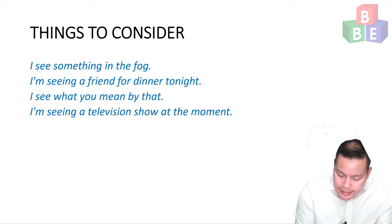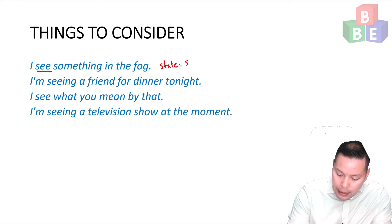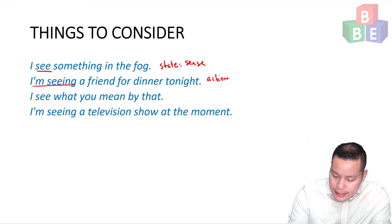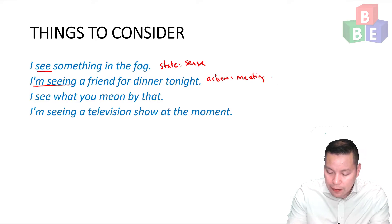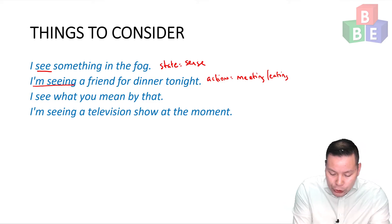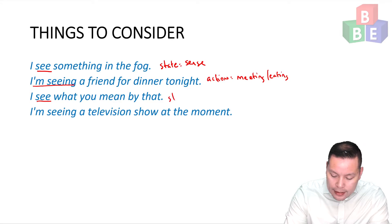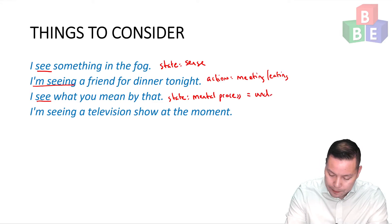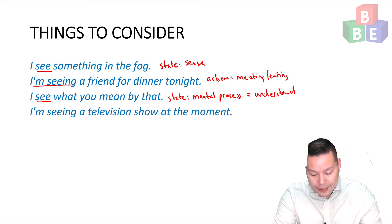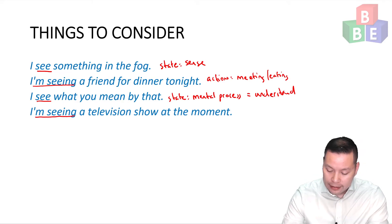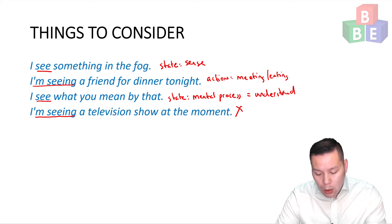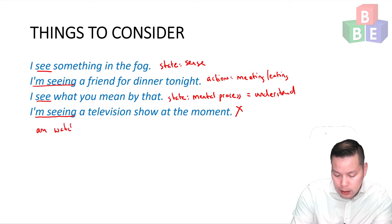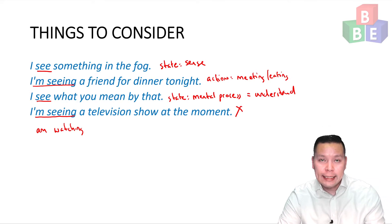Here's another example. I see something in the fog — this is a state verb of sense. I am seeing a friend for dinner tonight — this is an action verb with the meaning of meeting. I see what you mean by that — this is also a state verb, but not a sense; it is a mental process because it has the same meaning as understand. I am seeing a television show at the moment — this is incorrect; we should use I am watching.